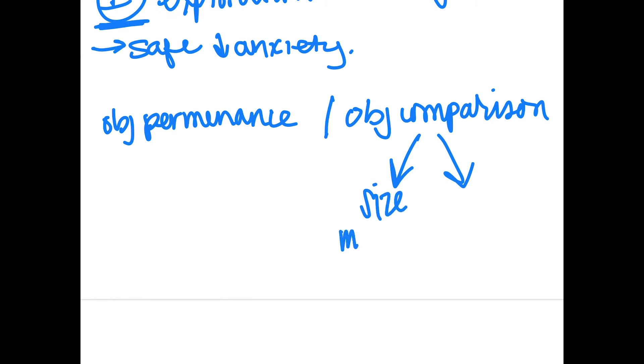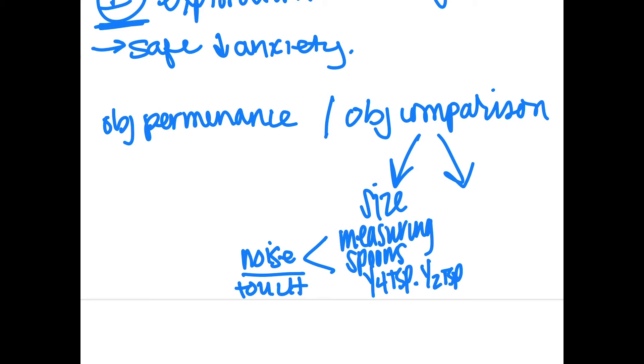So measuring spoons. You could have like a fourth of a teaspoon, you could have a half of a teaspoon. And what's cool about these measuring spoons is that if you bang them together, they may also make noise, which is a different sensory component, as well as they can touch them to determine the different size. And so that starts to increase their tactile discrimination.